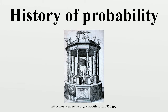Etymology: 'probable' and 'probability' and their cognates in other modern languages derive from medieval learned Latin, deriving from Cicero and generally applied to an opinion to mean plausible or generally approved. The mathematical sense of the term is from 1718. In the 18th century, the term 'chance' was also used in the mathematical sense of probability.